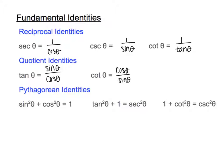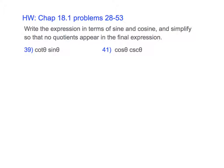Today we're going to manipulate and simplify trig expressions as much as we can. Here in chapter 18.1, we write the expression in terms of sine and cosine with no quotients — meaning the final expression can't have a fraction. First off, we want to change things to just sine and cosines, so I need to change the cotangent to be something else. Cotangent is equal to cosine over sine.